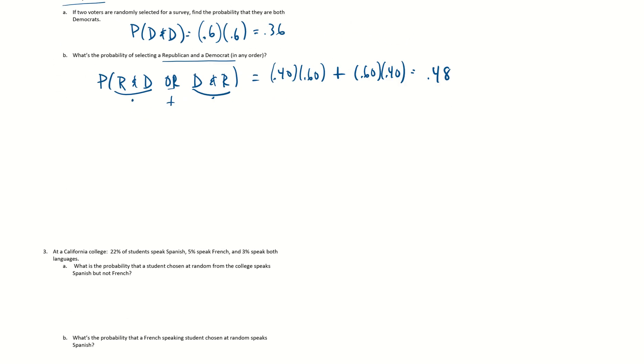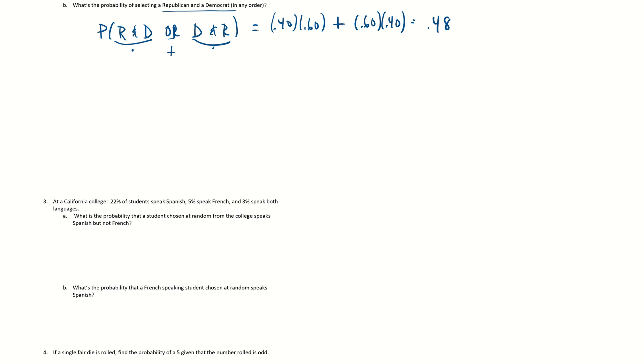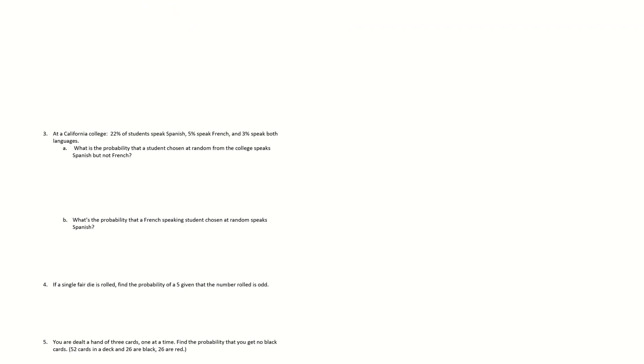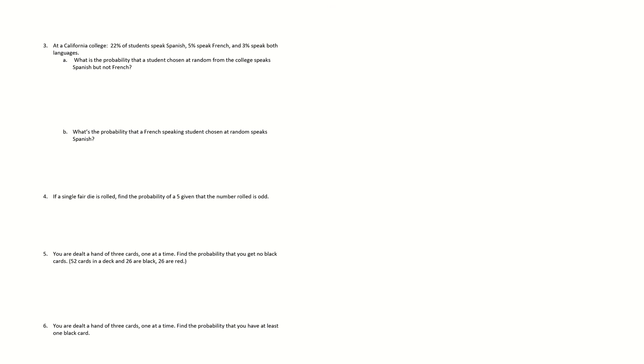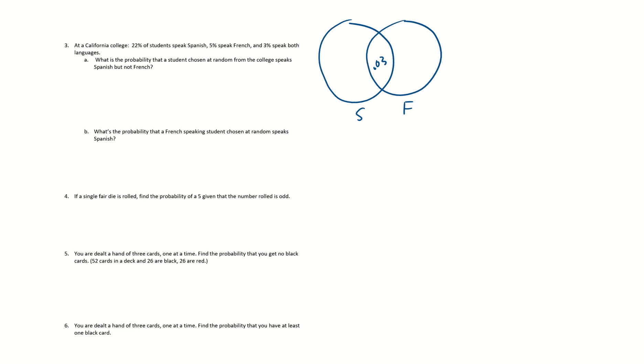All right. Number three. I've got my key right here just so I can have the answers handy to save time on the calculations. So we've got Spanish, French, and both. So when you see that, you should be thinking Venn diagram, Spanish, French. So 3% do both, 0.03. 22% are Spanish. So that means this would be 19 because 19 and 3 gives you the 22. And the French is 5, so that means 2% are over here.